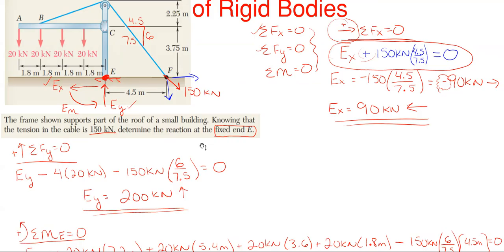There's always a way to check your answers: sum moments about point F, including your reactions and the four 20 kilonewton forces but excluding the cable force. The result should equal zero. I hope this video was helpful. If you want to see more problems solved, check out the other videos on our channel. Please like, leave a comment, and subscribe — thanks for watching and have a fantastic day!